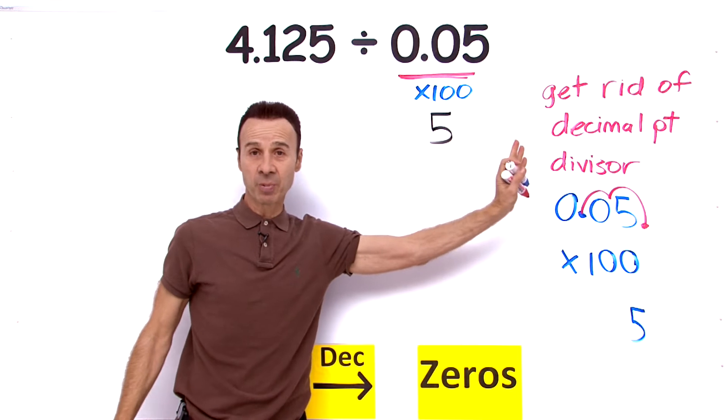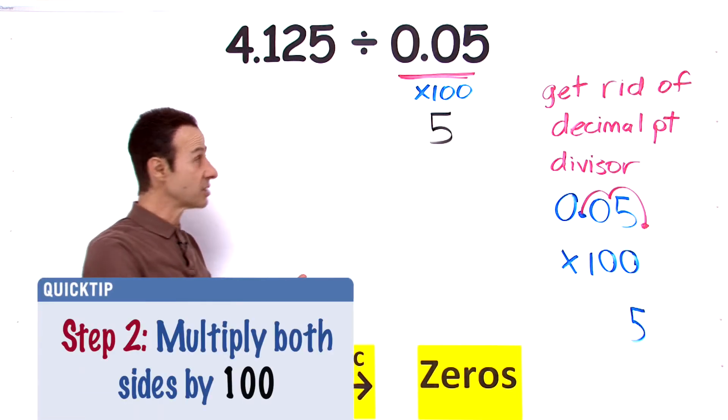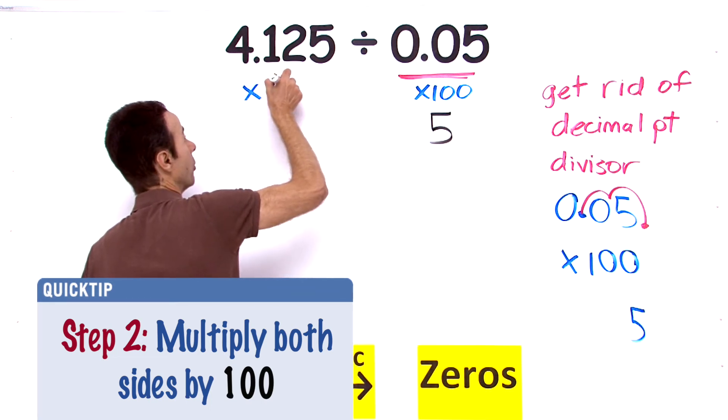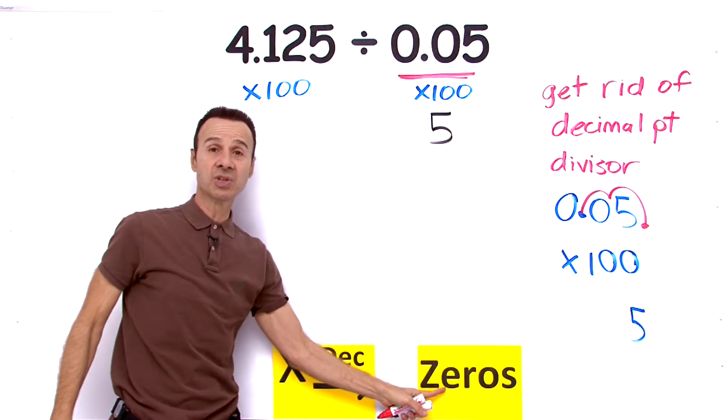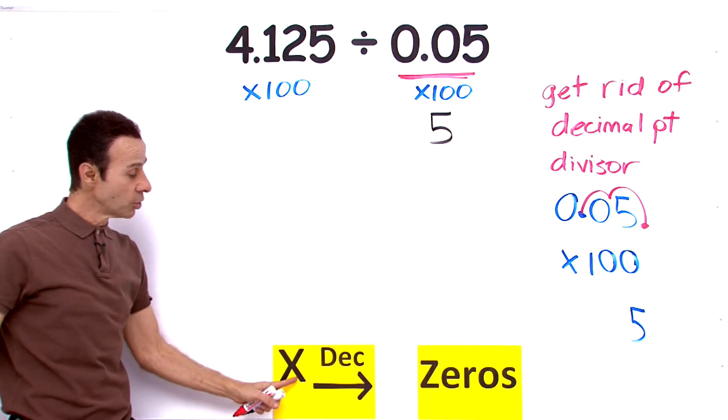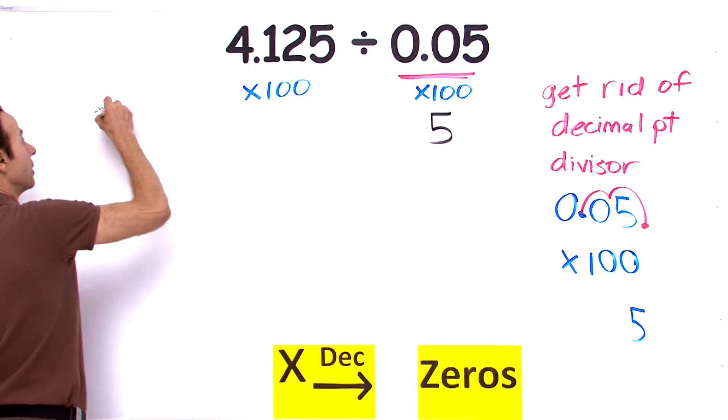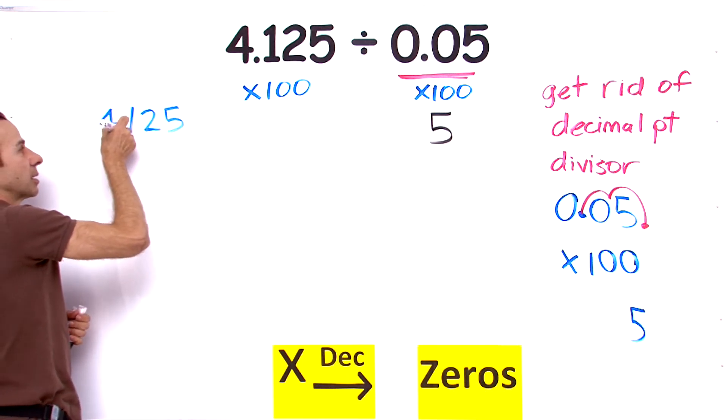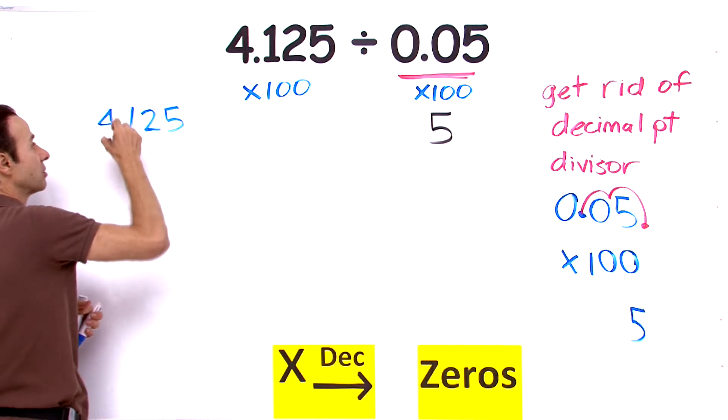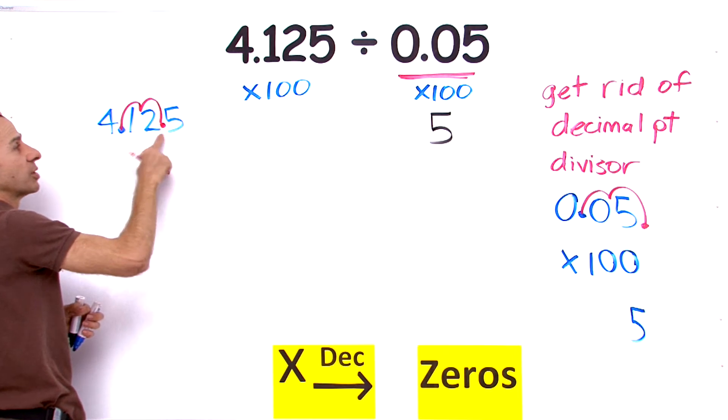Now if we multiply this side by 100, what do we do on this side? We do the same thing. So we multiply by 100. Now how many zeros in 100? There are two zeros, so that means we move two decimal places to the right. So let's take this 4.125 and move that decimal place by two places to the right. Let's count: one, two. There is our new decimal place right there between the 2 and the 5.